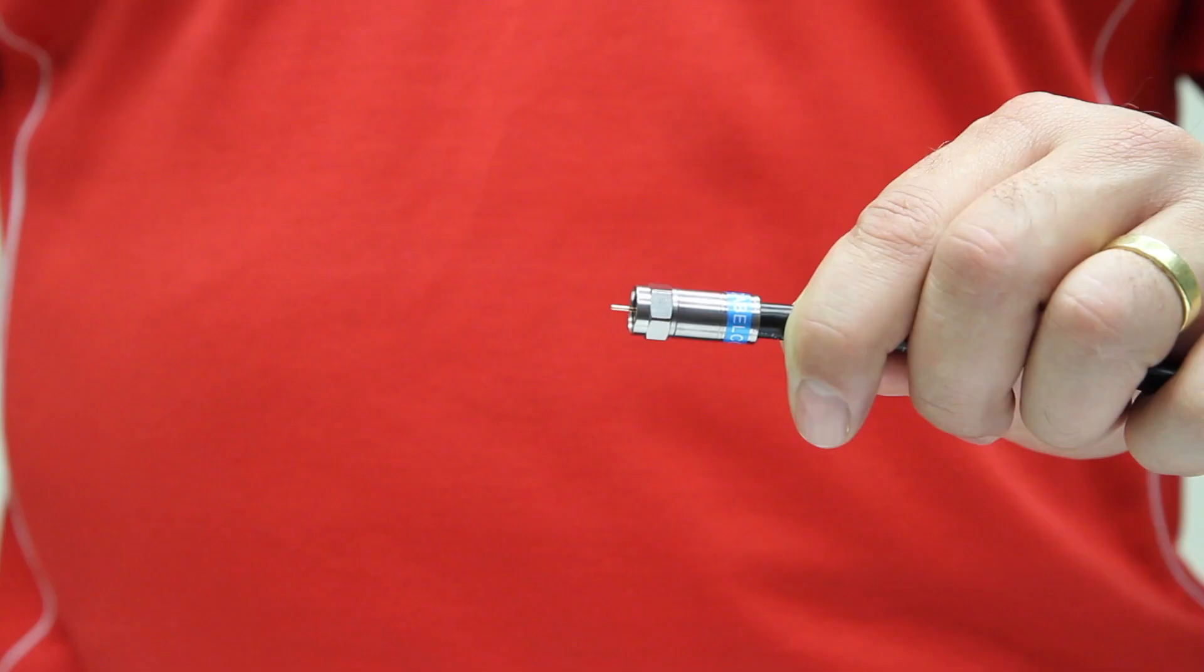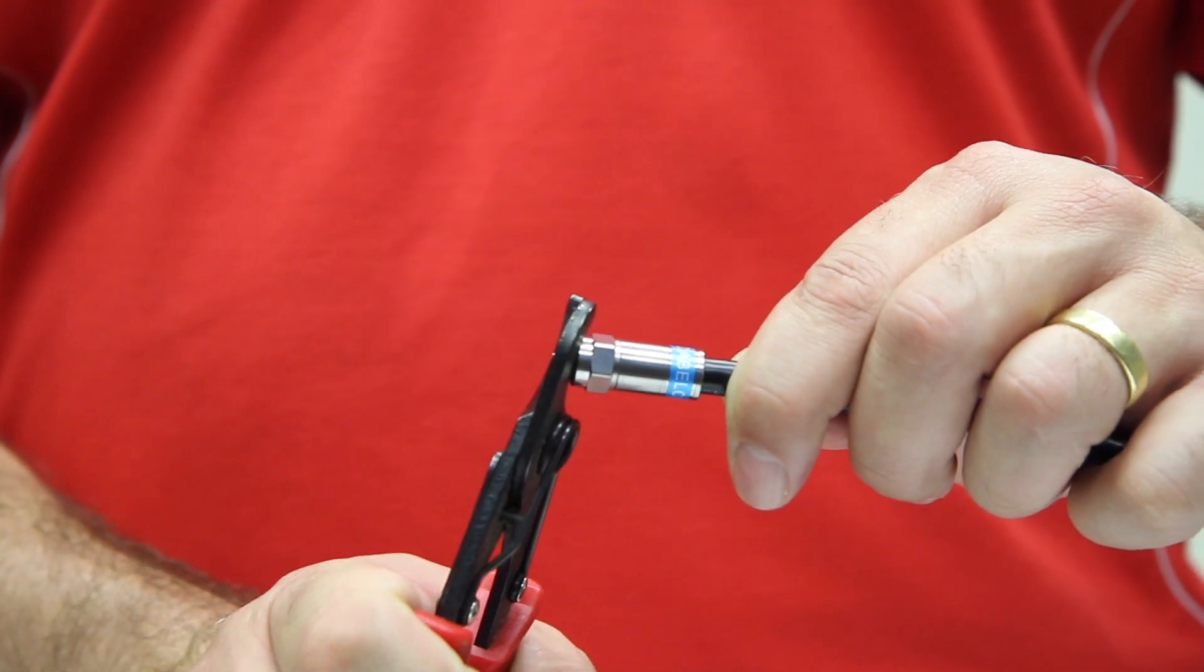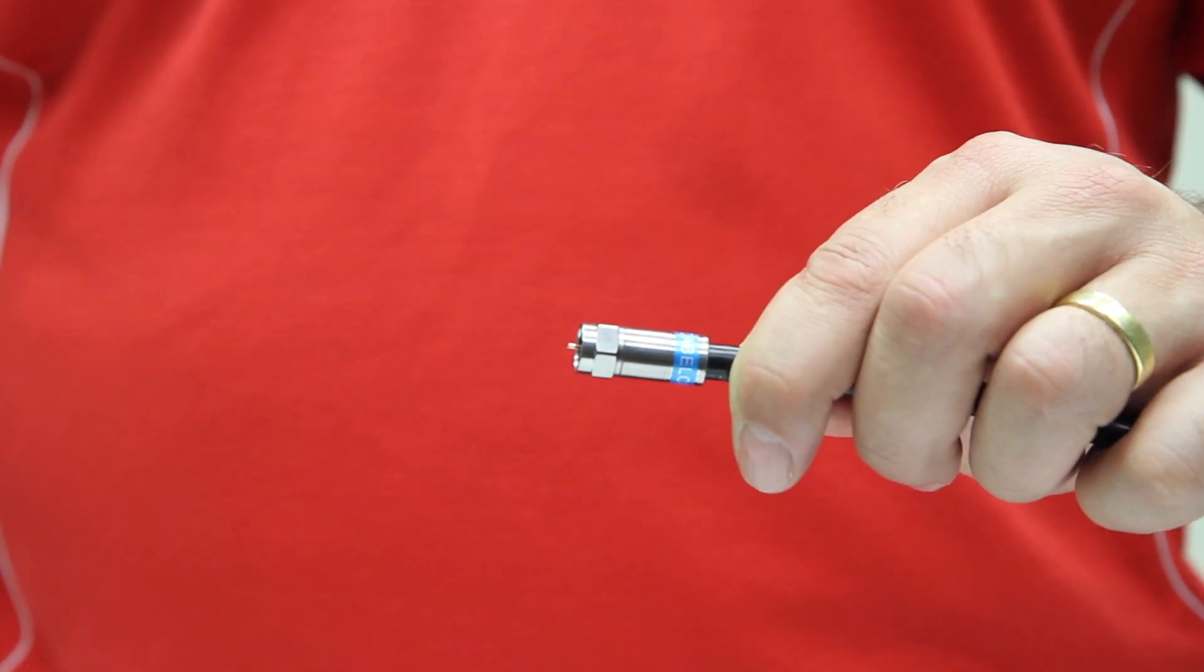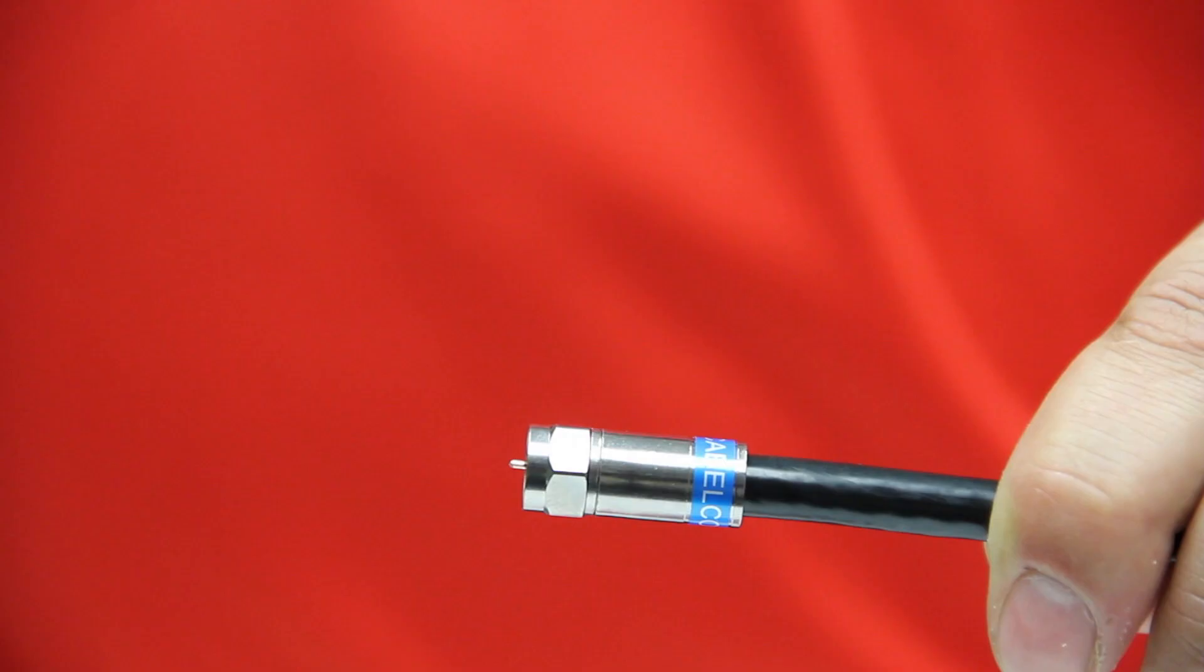Lastly, use your cable cutting tool to cut off the center conductor to approximately one to two millimeters from the end of the connector, and the job is done.